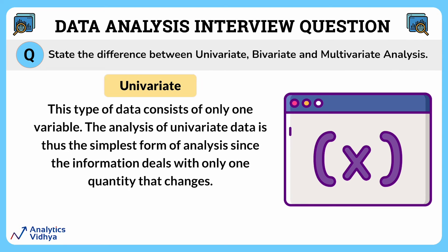Univariate data is like looking at one thing at a time. It's when you are only interested in one variable or one aspect of something. For example, if you are only thinking about people's height and nothing else, that's univariate data.